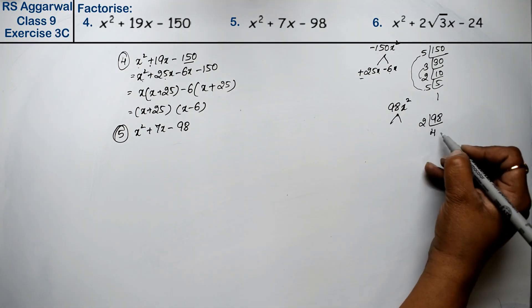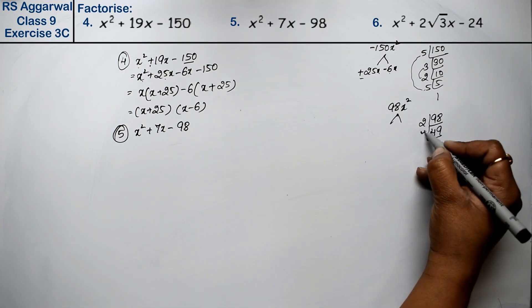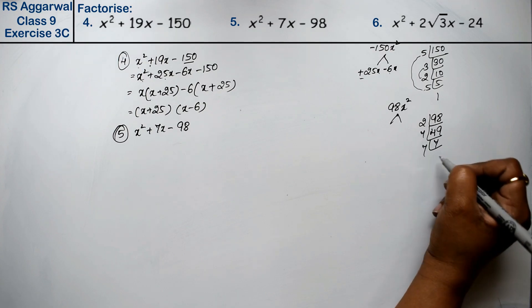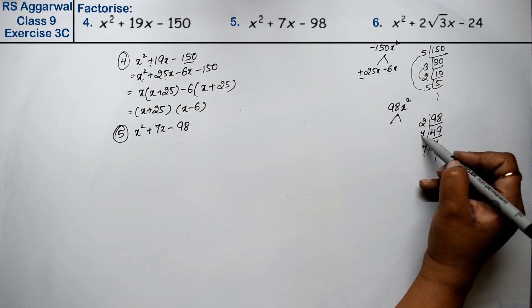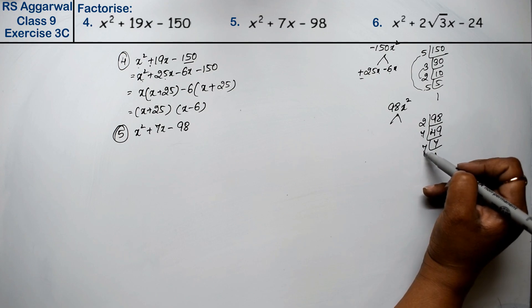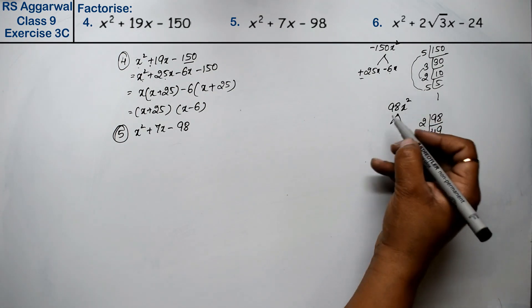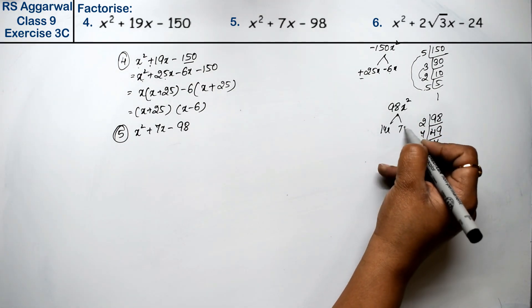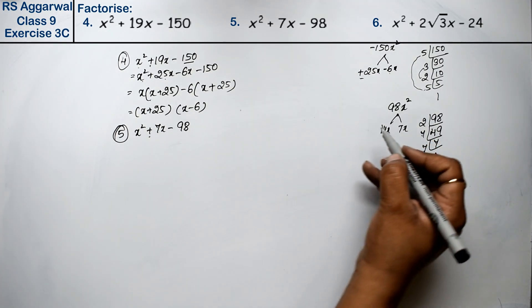98: 2 times 49 is 98, 2 times 9 is 18, 7 times 7 is 14, and 7 times 1 is 7. Now 7 times 2 is 14. 14 plus 7 is 7. So 14x and 7x will give 7x. This is plus sign, so this is minus sign.